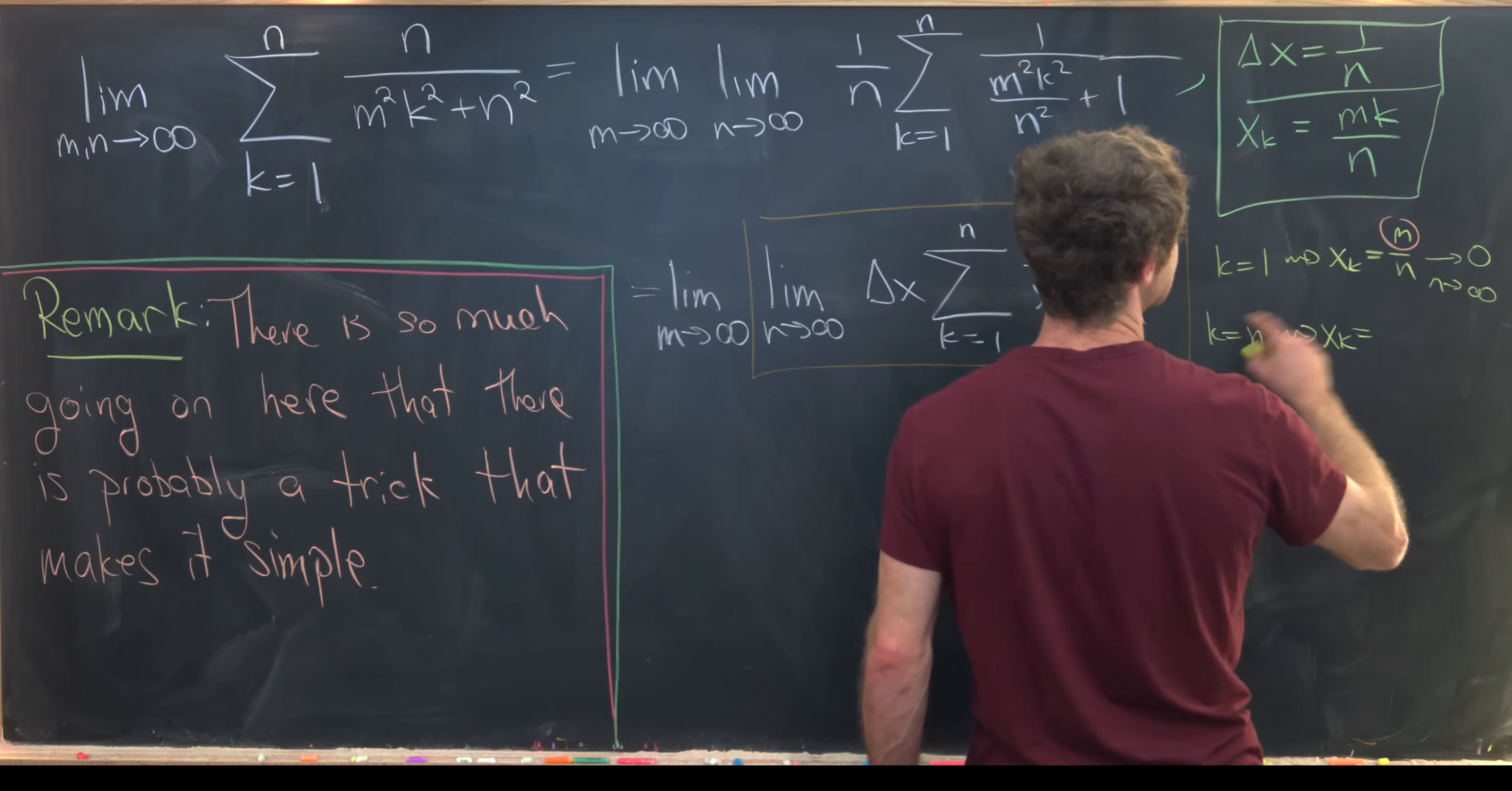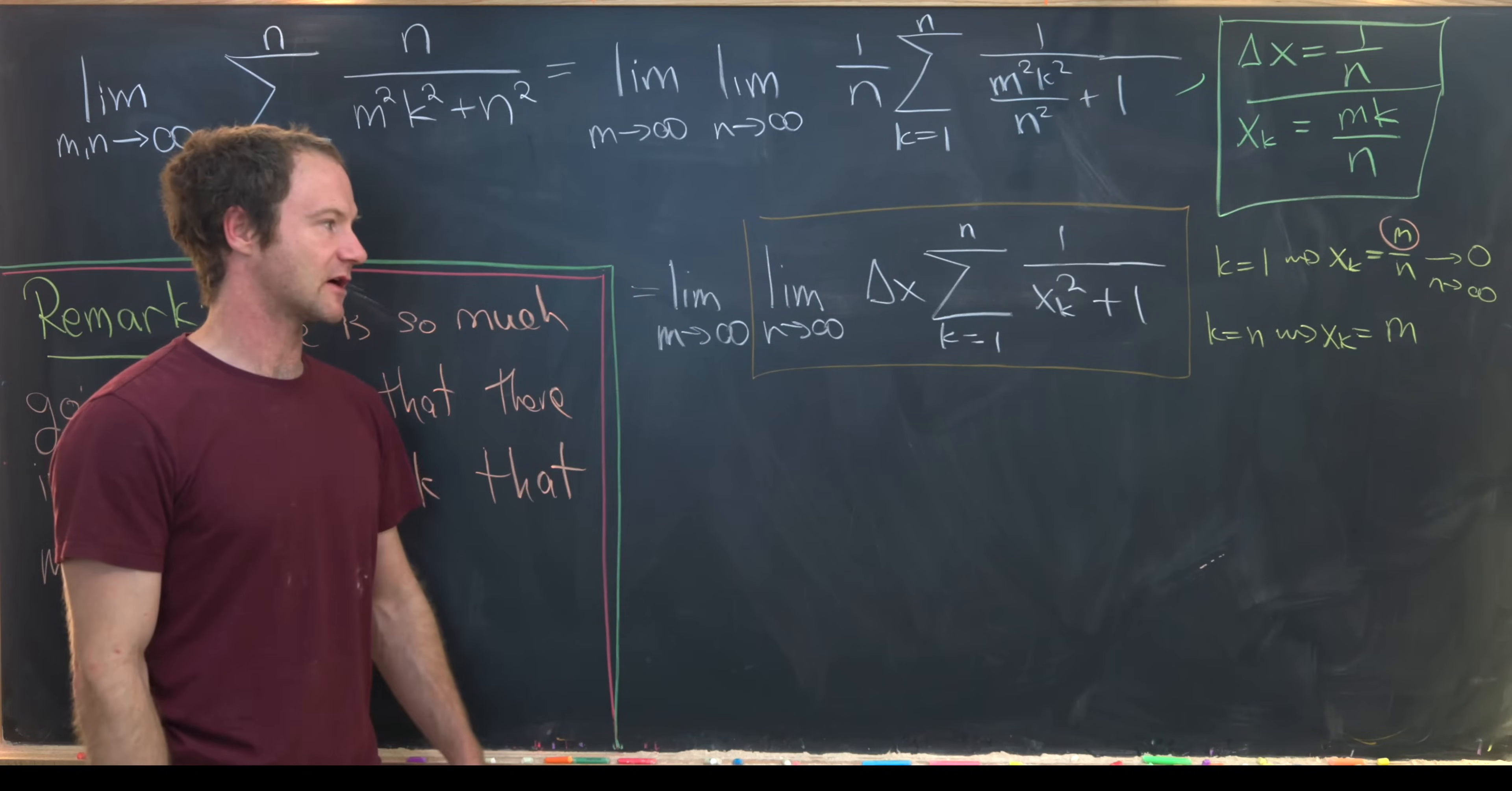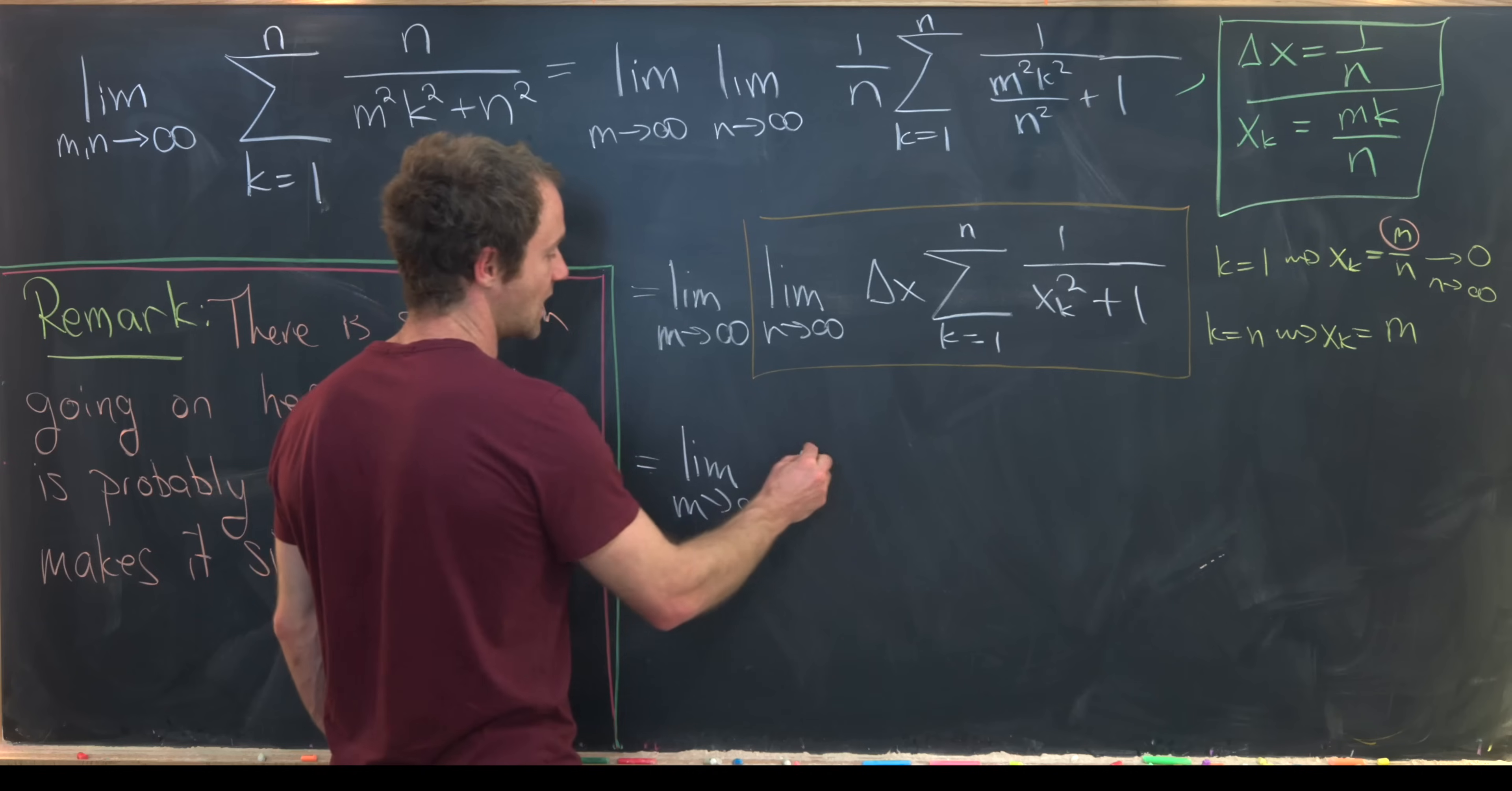Let's see what happens when we have k equals n. If k is equal to n, then that gives us x sub k is equal to m. That gives us our lower bound and our upper bound for the integral.